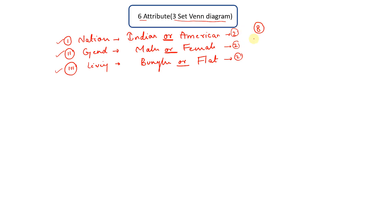Solving such questions by making tables would be really very complex because we have three different sets, three different parameters. Each parameter contains two attributes: either Indian or American, another parameter consists of male or female, bungalow or flat.